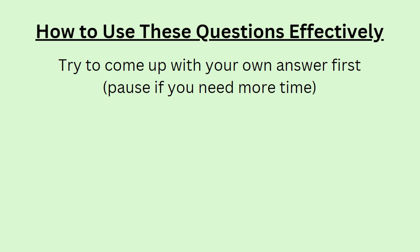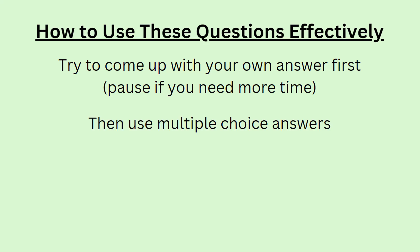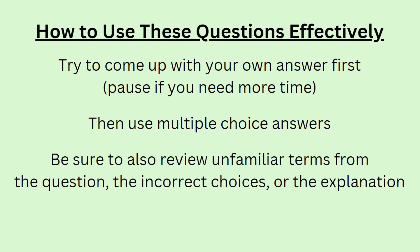One is to try to come up with your own answer first. I'll pause after I read the question and before I show the multiple choice options, and you want to use that time to try to think of your own answers. You might want to pause the video if you need more time to do that. Only then should you look to the multiple choice answers, and you should have a sense of what it is that you're looking for. Make sure that you also review any unfamiliar terms that appear in the question, in the incorrect answer choices, or in the explanation.